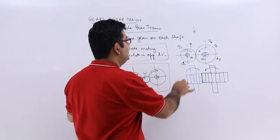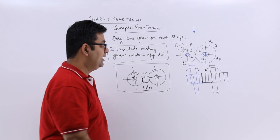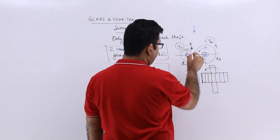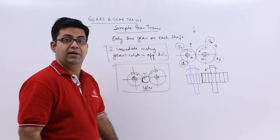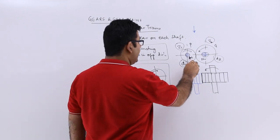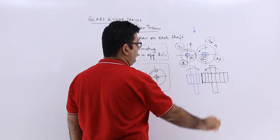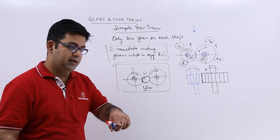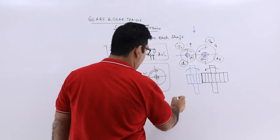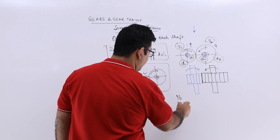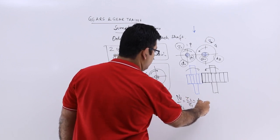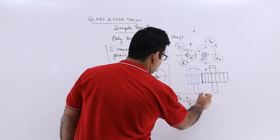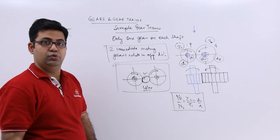Now if you look at this, Z1 is the number of teeth on pinion, Z2 is the number of teeth on gear. D1 is the PCD for pinion, D2 is the PCD for gear. N1 is the RPM for pinion and N2 is the RPM for gear. If you want to write down the velocity ratio, it is N1 by N2 which is Z2 by Z1 which is D2 by D1. It has a very simple formula to use.